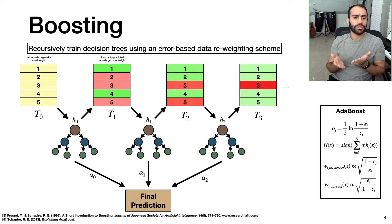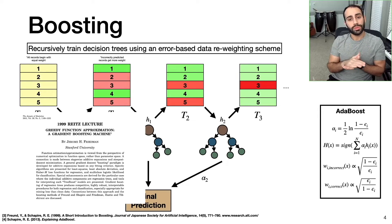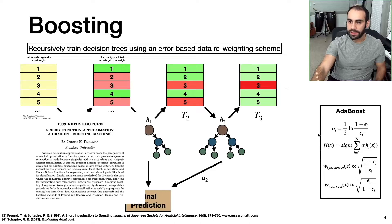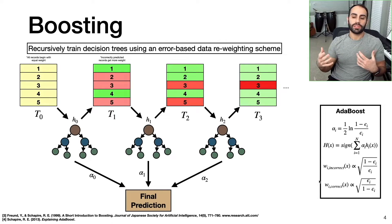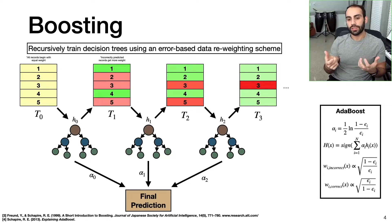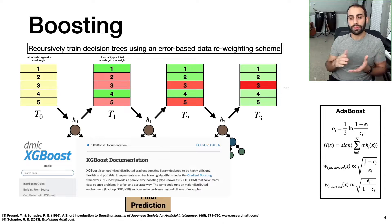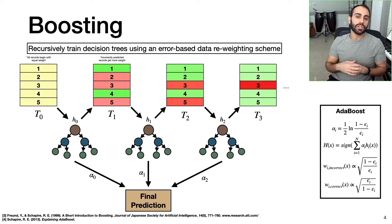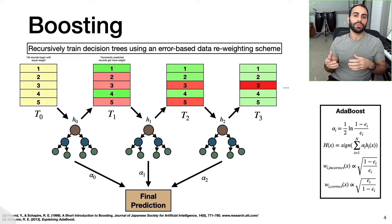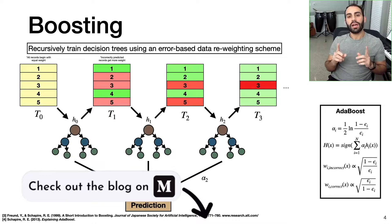Ever since AdaBoost was introduced in the mid-90s, there have been two major innovations around boosting. The first is called gradient boosting, which provides a more generalized framework where you can take any differentiable loss function, define a gradient, and define a boosting strategy from it. The second major innovation comes from a library called XGBoost, which makes the gradient boosting idea much more scalable and computationally efficient through a set of different heuristics. I talk a bit more about gradient boosting and XGBoost in the blog associated with this video, along with the original references.